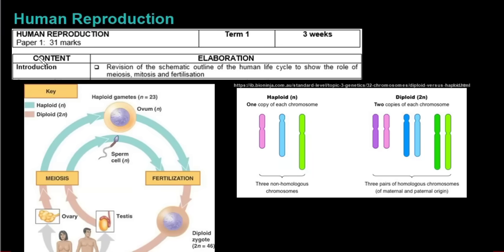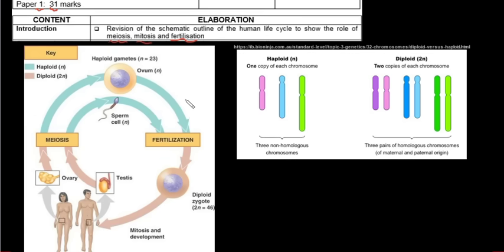In this video we'll be looking at human reproduction, which is found in paper 1 and consists of around 31 marks. We'll look at the schematic outline of the human life cycle, specifically with meiosis, mitosis, and then fertilization. After that we'll move on to the male and the female reproductive systems.